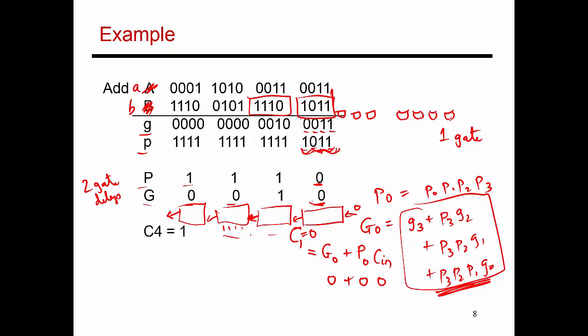Now let's look at C2 over here. C2 is G1 plus P1 times C1. So this is 0, P1 is a 1, and G1 is a 1. So that means this set of four bits is going to produce a carry.